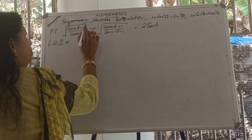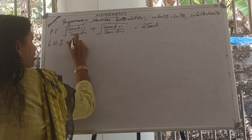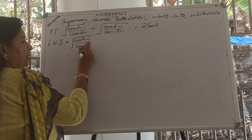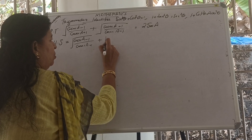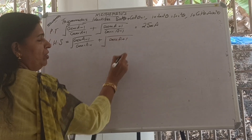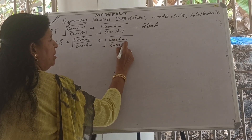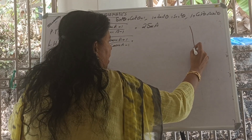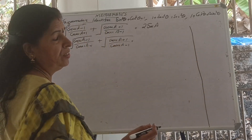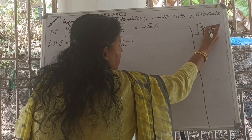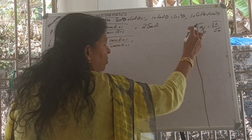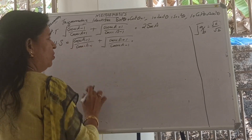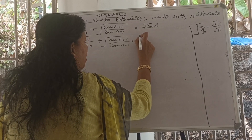Starting from LHS: square root of (cosec A minus 1) by (cosec A plus 1) plus square root of (cosec A plus 1) by (cosec A minus 1). From algebraic identities studied in lower classes, we rationalize each fraction by multiplying numerator and denominator appropriately.